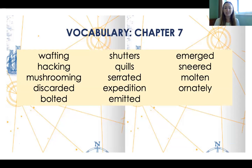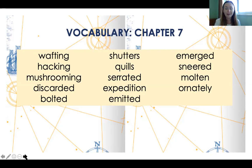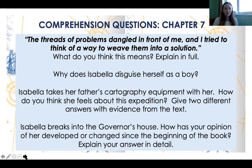Chapter seven vocabulary includes: wafting, hacking, mushrooming, discarded, bolted, shutters, quills, serrated, expedition, emitted, emerged, sneered, molten, and ornately. You'll notice the amount of vocabulary is going down because the author tends to reuse vocabulary — this is quite common. There tends to be more vocabulary work at the beginning of a book, so it's worth putting in the effort early on.